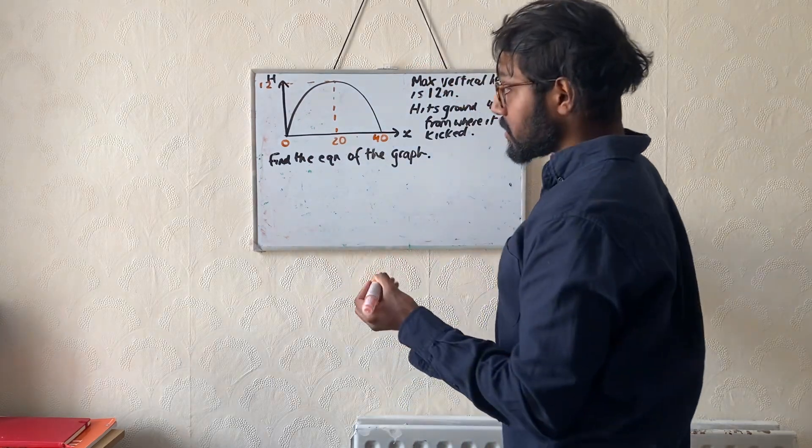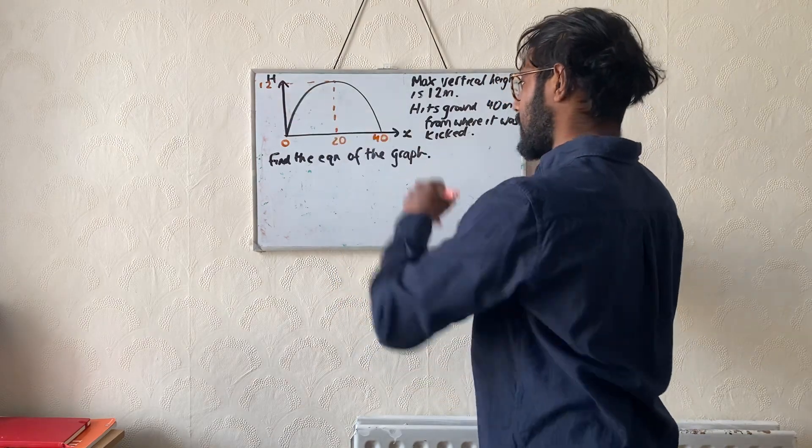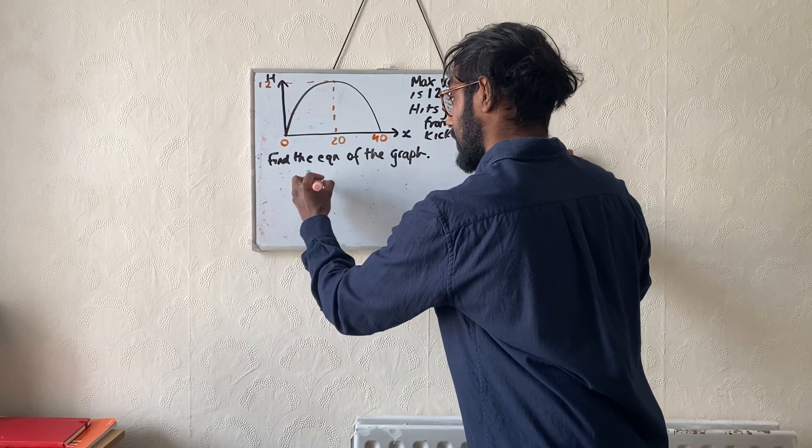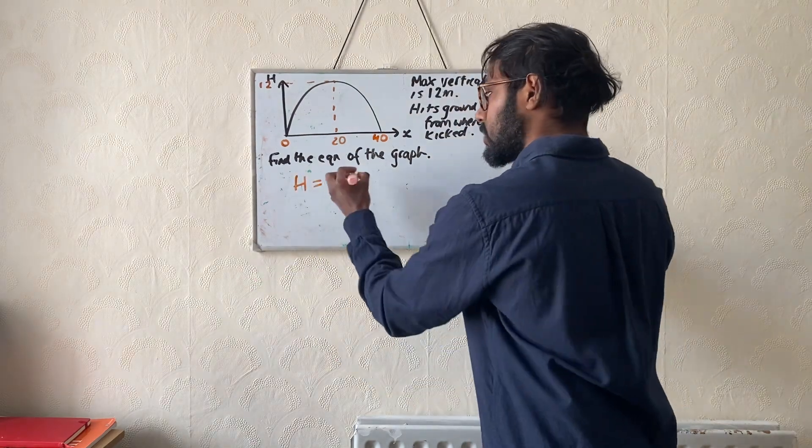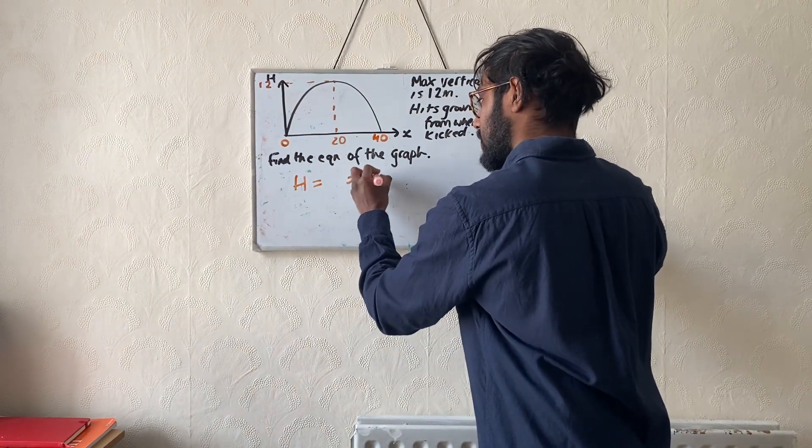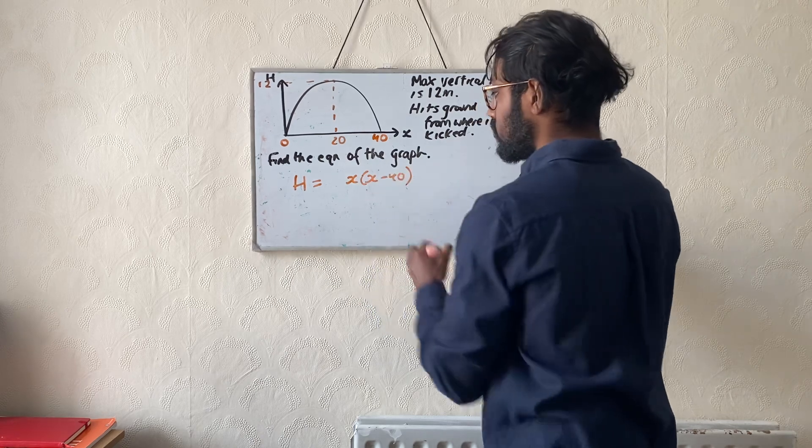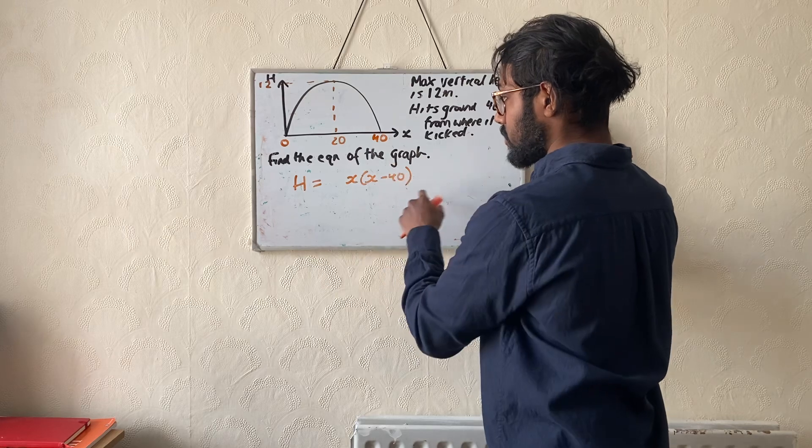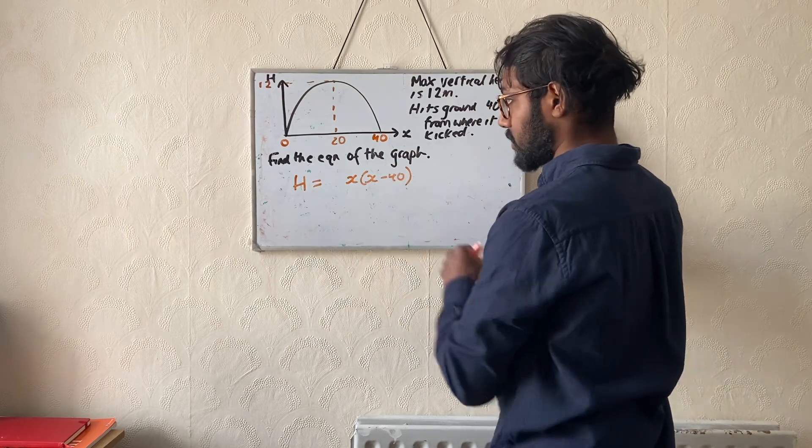Now what we can do is link h with x by saying h is equal to—I'm going to purposely make a mistake—h is equal to x brackets x minus 40. Let me explain the reasoning behind this. First of all, one of the roots is x equals zero, the other root is x equals 40. x1 and x2 are zero and 40.